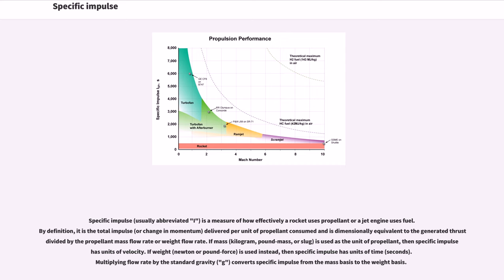Specific impulse is a measure of how effectively a rocket uses propellant or a jet engine uses fuel. By definition, it is the total impulse delivered per unit of propellant consumed, and is dimensionally equivalent to the generated thrust divided by the propellant mass flow rate or weight flow rate.